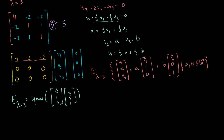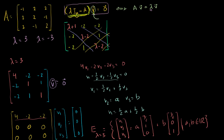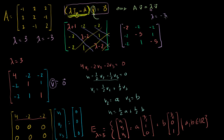Now let's do the eigenspace corresponding to lambda equal to minus 3. If lambda is minus 3, the matrix becomes: minus 3 plus 1 is minus 2, minus 3 minus 2 is minus 5, minus 3 minus 2 is minus 5, and all other entries remain: minus 2, minus 2, 1, minus 2, minus 2, 1. The eigenspace for lambda equal to minus 3 is the null space of this matrix.